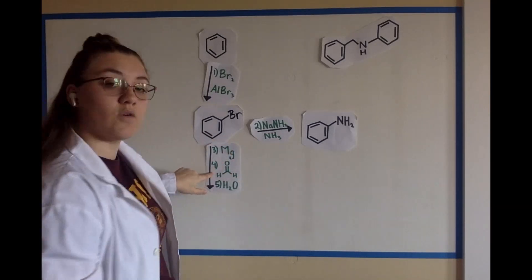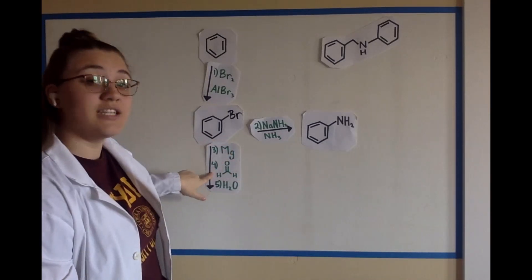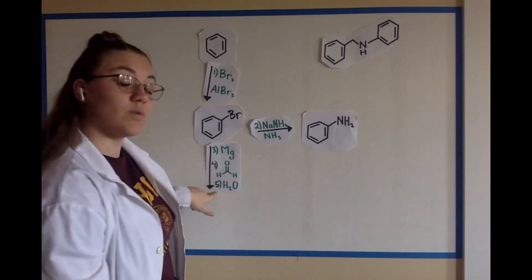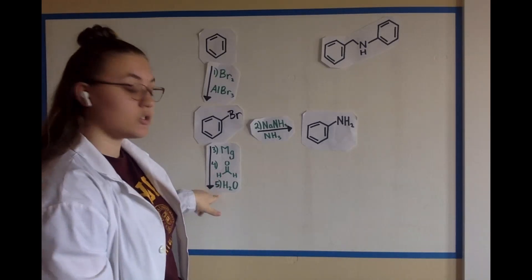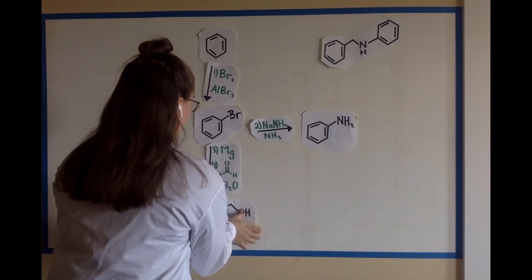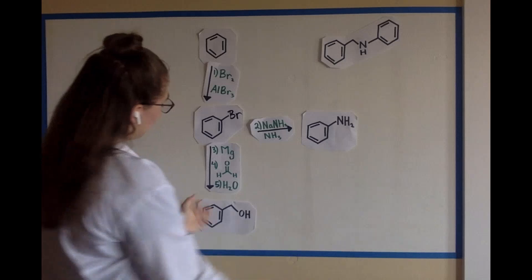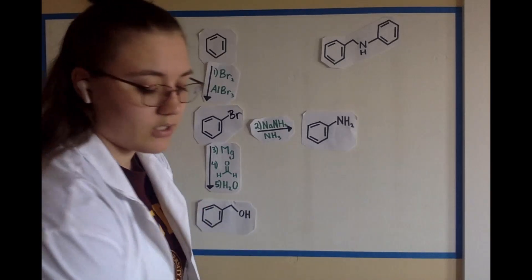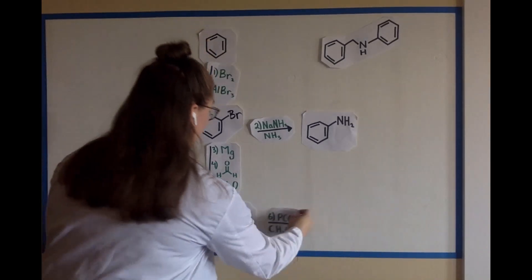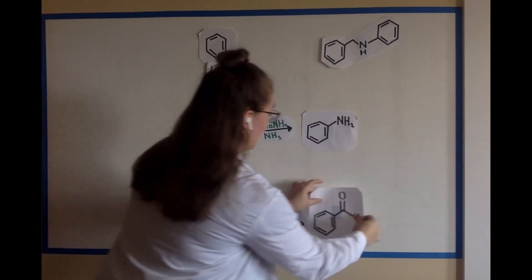Step four is formaldehyde. Step five, you add water so it protonates, and now you've got benzene alcohol. Oxidize it, please — you see, it's become benzaldehyde.